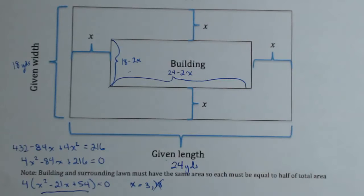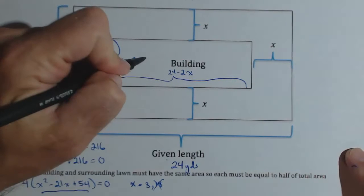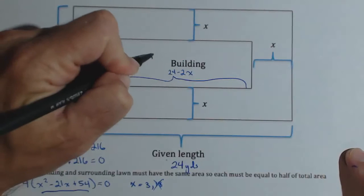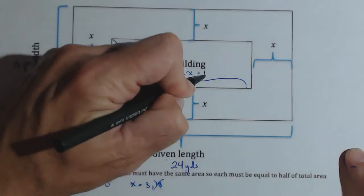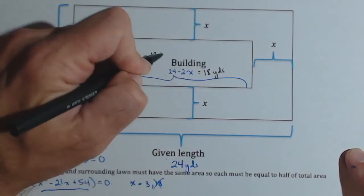So subbing 3 in for X, this one would become 12 and this one would become 18. And our units on those would be yards. So those would be the dimensions of the building that meet this criteria.